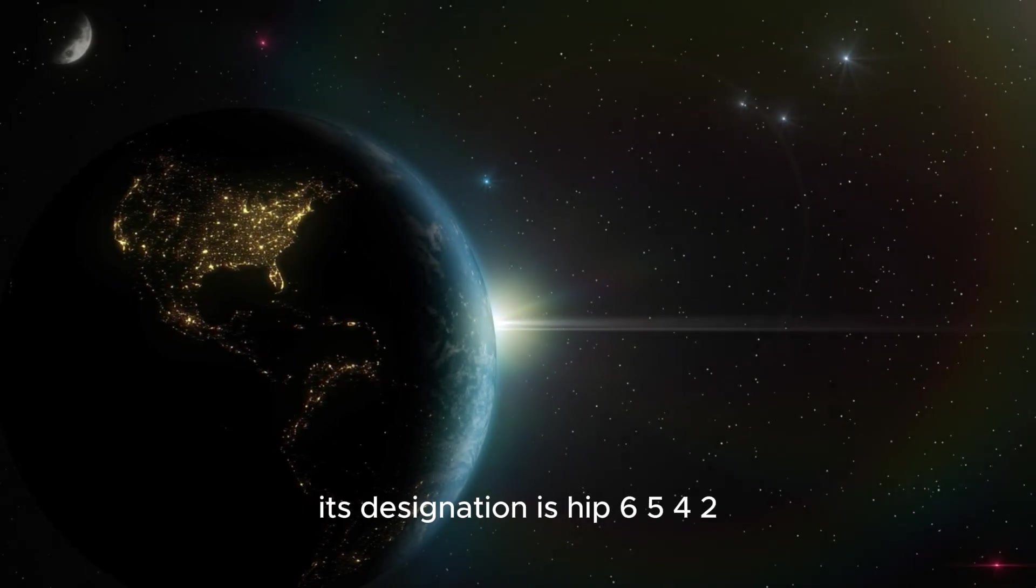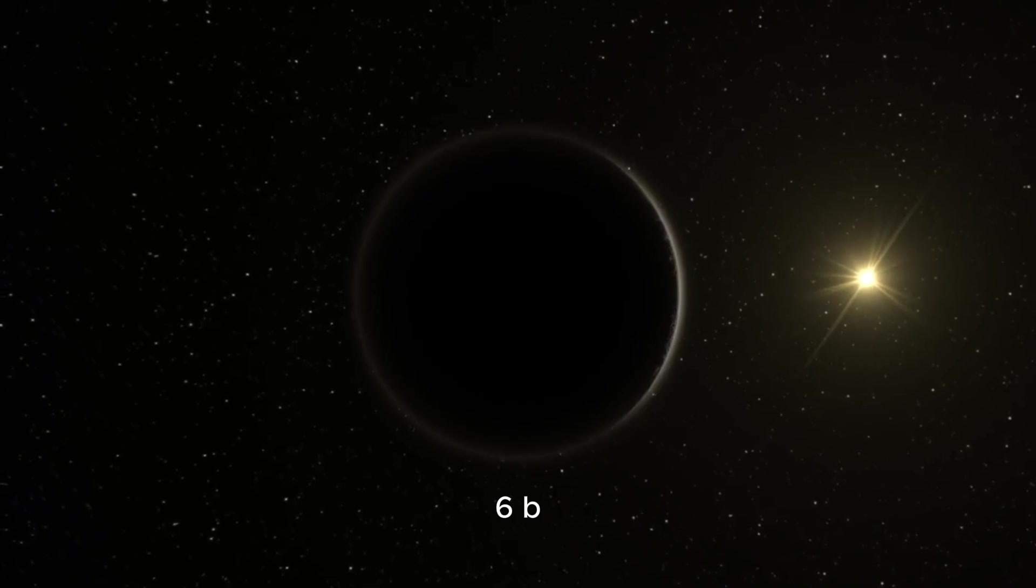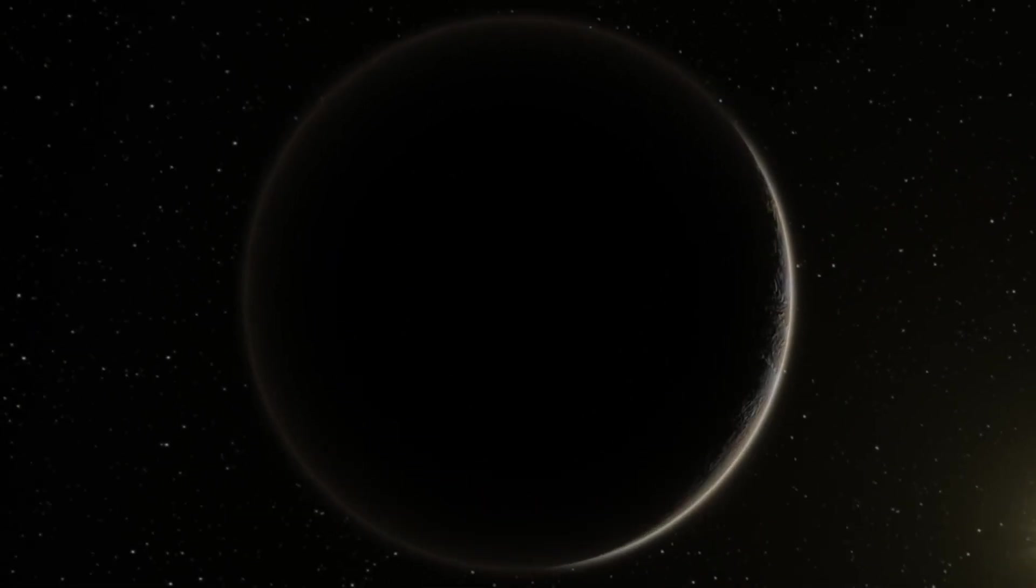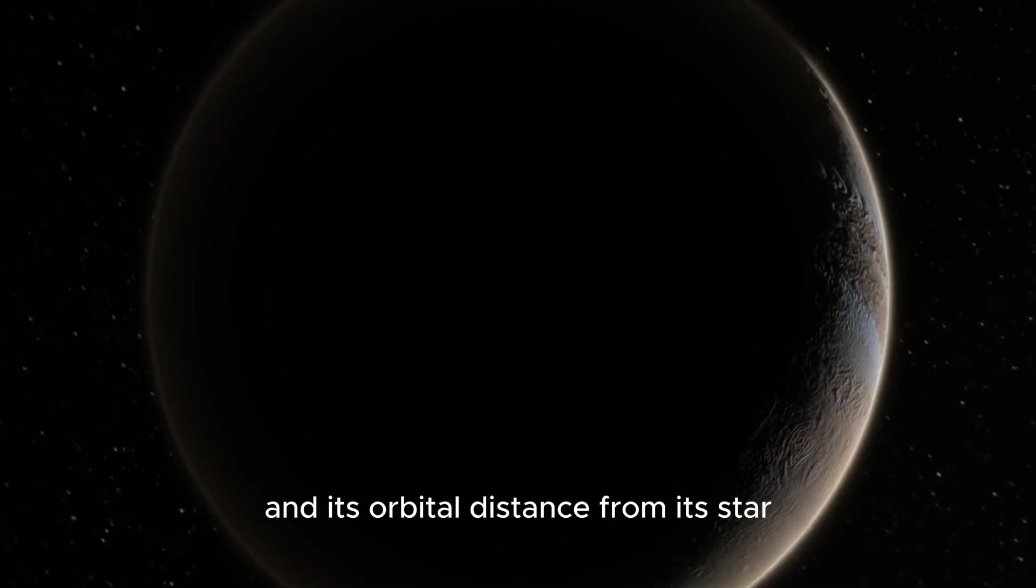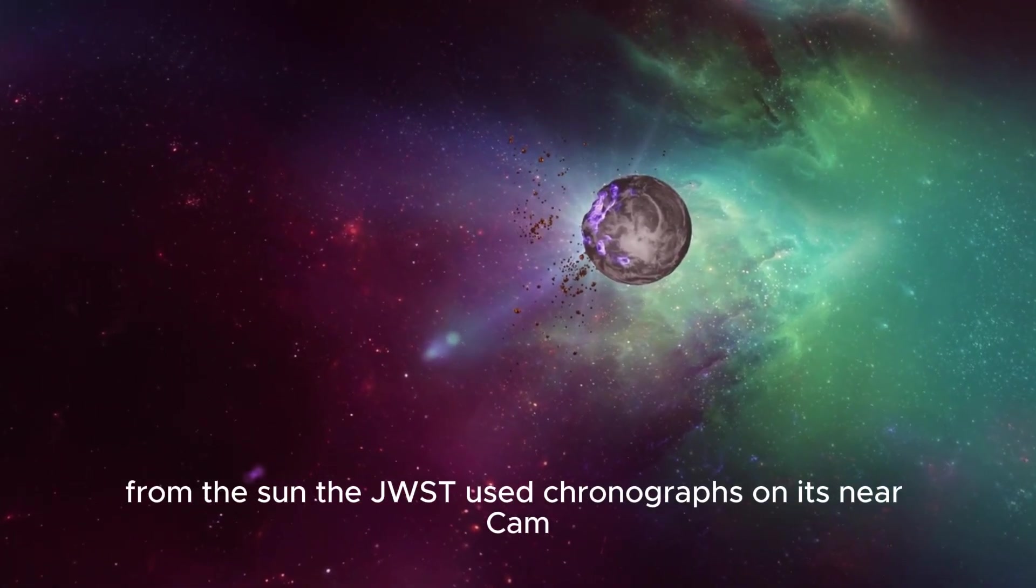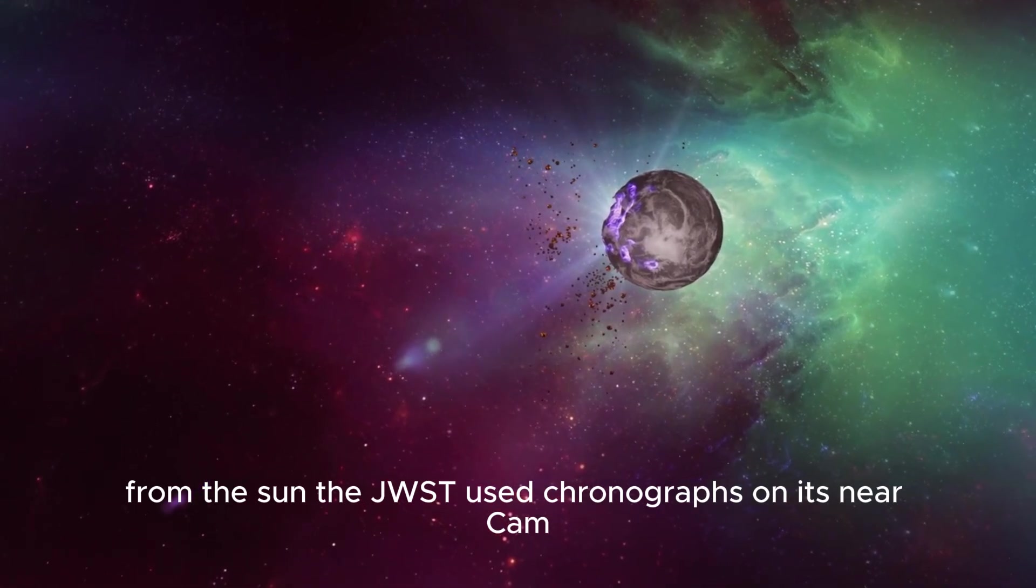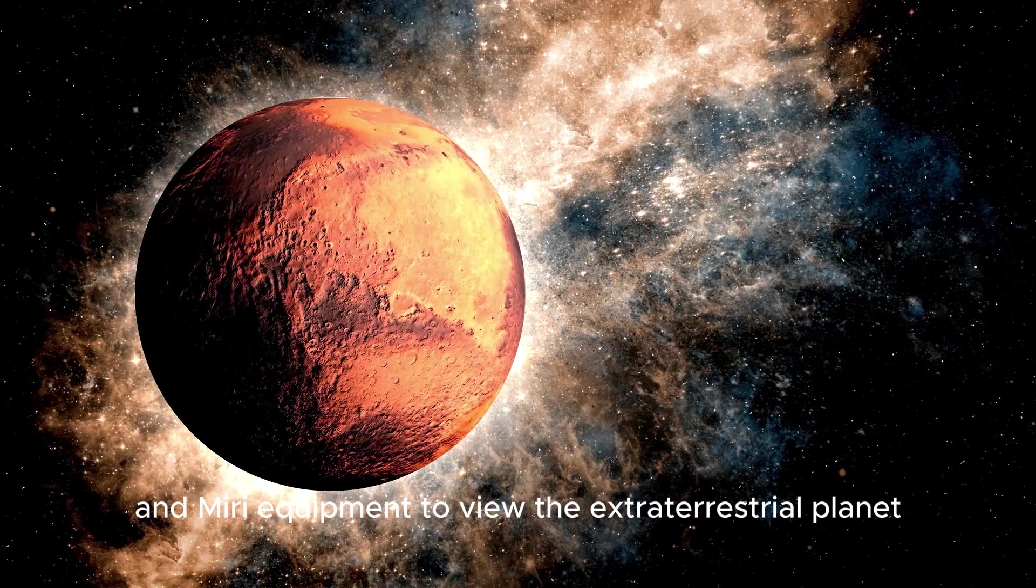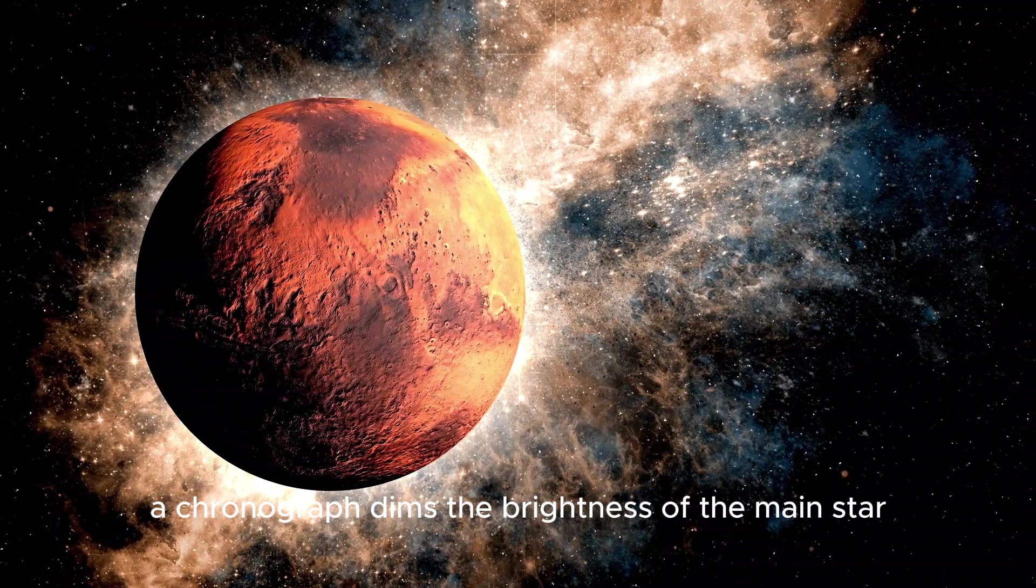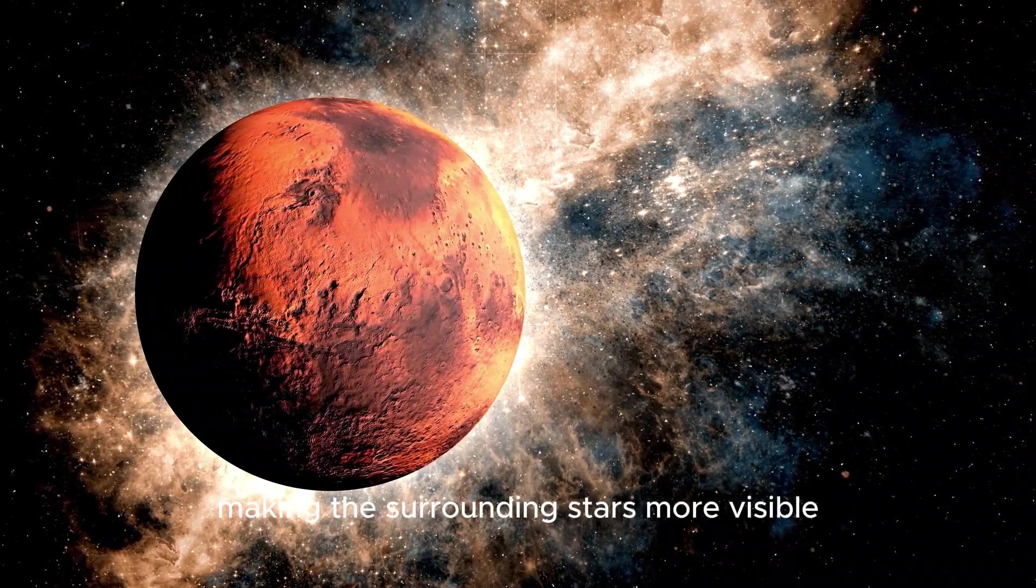Its designation is HIP 65426b. Its mass ranges from 6 to 12 times that of Jupiter, and its orbital distance from its star is approximately 100 times that of Earth's from the Sun. The JWST used coronagraphs on its near-cam and MIRI equipment to view the extraterrestrial planet. A coronagraph dims the brightness of the main star, making the surrounding stars more visible.